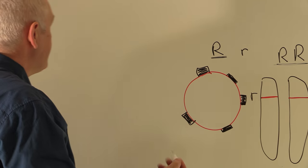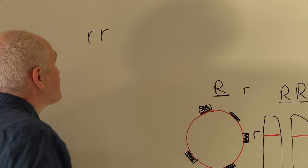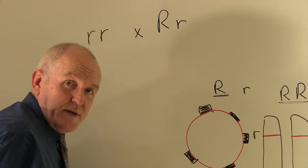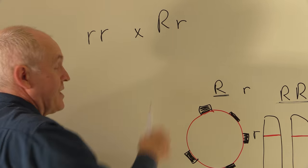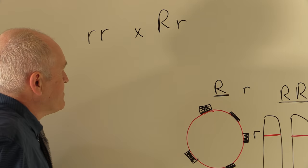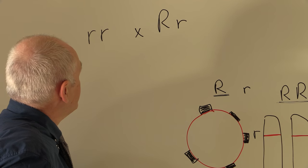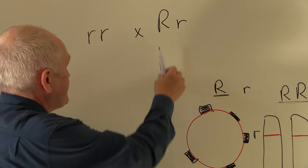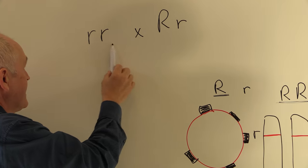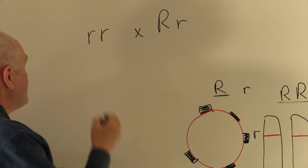So we know that the mother is going to be Rhesus negative. She's going to be two small r's. And the father could be one large R and one small r. He could be carrying one copy of the Rhesus gene and the other position on the other homologous chromosome could be the recessive gene. In other words, this father is heterozygous for the trait, whereas the mother is clearly homozygous recessive.